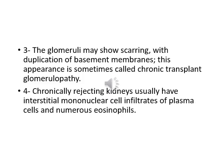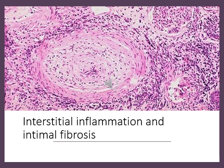The glomeruli may show scarring with duplication of the basement membrane — an appearance sometimes called chronic transplant glomerulopathy. Chronically rejected kidneys usually have interstitial mononuclear cell infiltrate, mainly chronic inflammatory cells like plasma cells and numerous eosinophils. In this photo, we can see dense interstitial inflammatory reactions surrounding blood vessels and glomeruli, and blood vessels showing thick walls and narrow lumen due to intimal fibrosis.